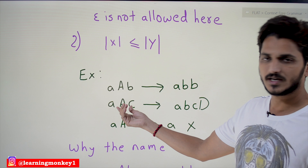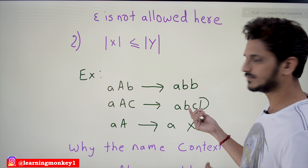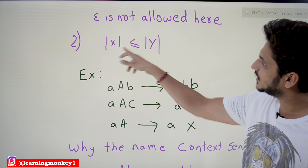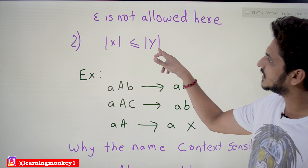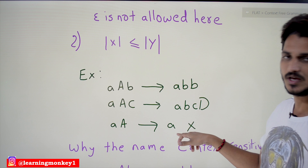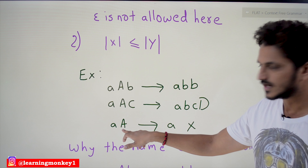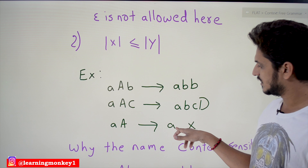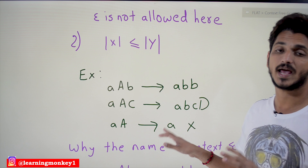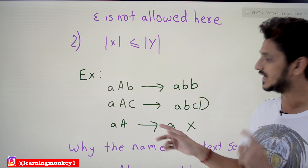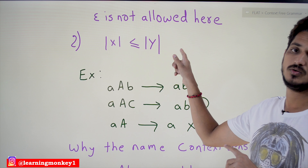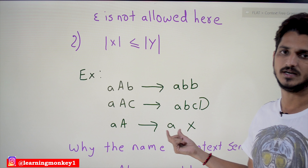Consider another example: the left hand side has three symbols and the right hand side has four symbols — three is less than or equal to four, so it is accepted. But AA → A is not a valid context sensitive grammar production, because the left hand side has two symbols and the right hand side has only one symbol. It is not accepted — the length on the left hand side must always be less than or equal to the length of the right hand side.